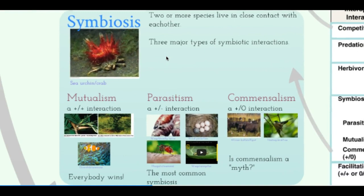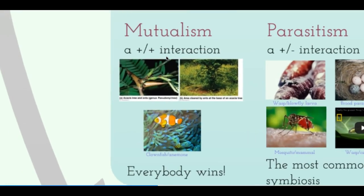Symbiosis has three types: mutualism, parasitism, and commensalism. Mutualism is a plus-plus interaction where both species benefit. Parasitism is a plus-minus interaction where only the parasite benefits and the host is harmed. Commensalism is when one species benefits and the other is neither positively nor negatively affected.